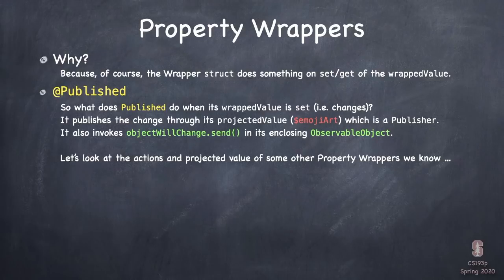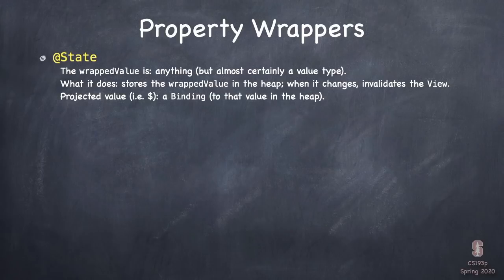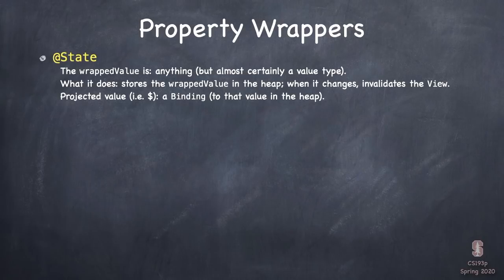@State: the wrappedValue is anything, probably a value type. What it does is store the wrappedValue in the heap so that it can be changeable — normally our views are read-only, but if it lives in the heap we can change it. It also invalidates the view whenever the wrappedValue changes. Its projectedValue — the $ value — is a binding, not a publisher. A binding is essentially a way to connect one var to another, so taking the $ value of a state lets you bind to that value in the heap.